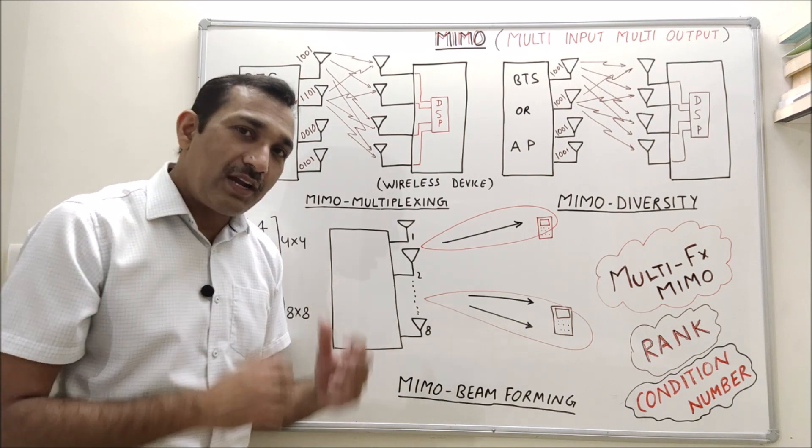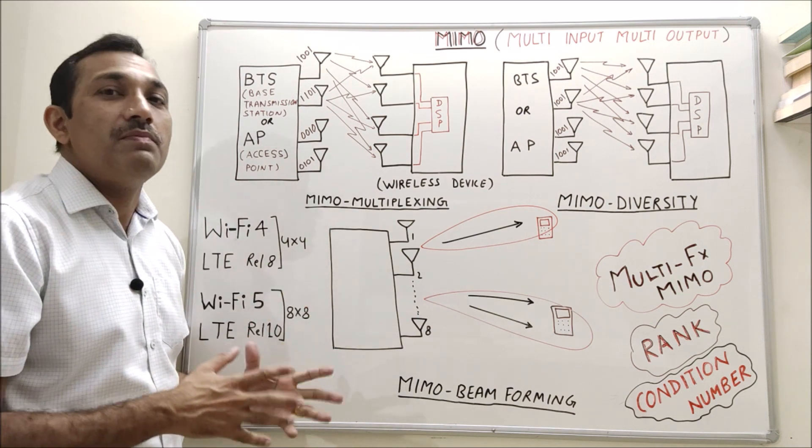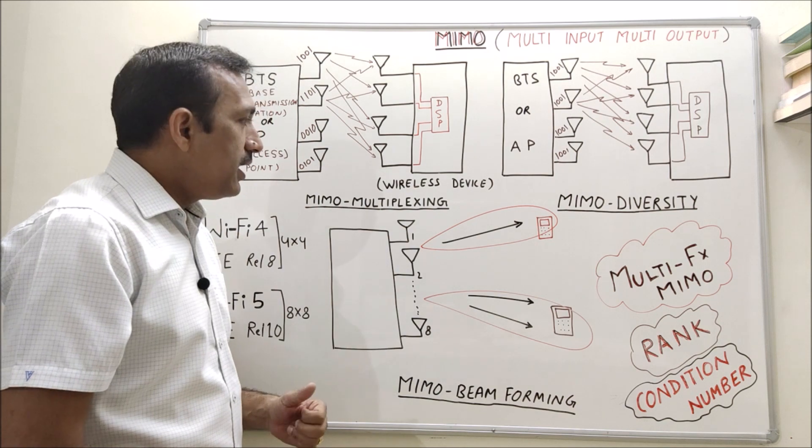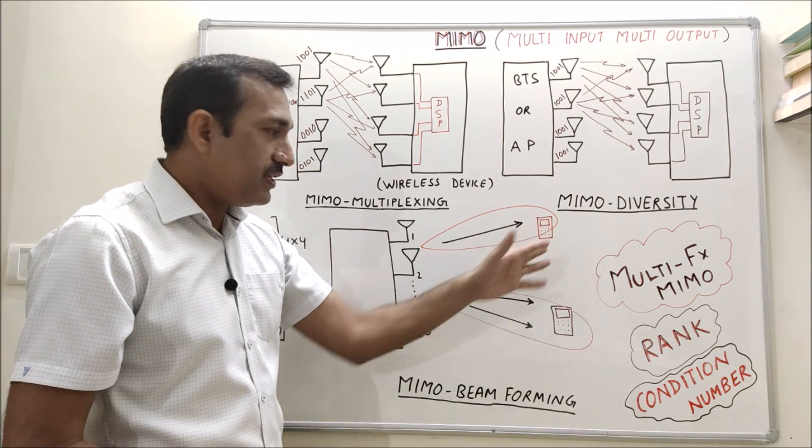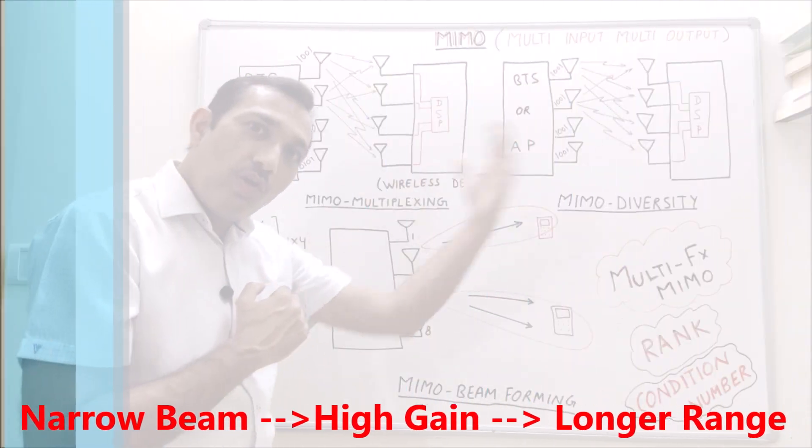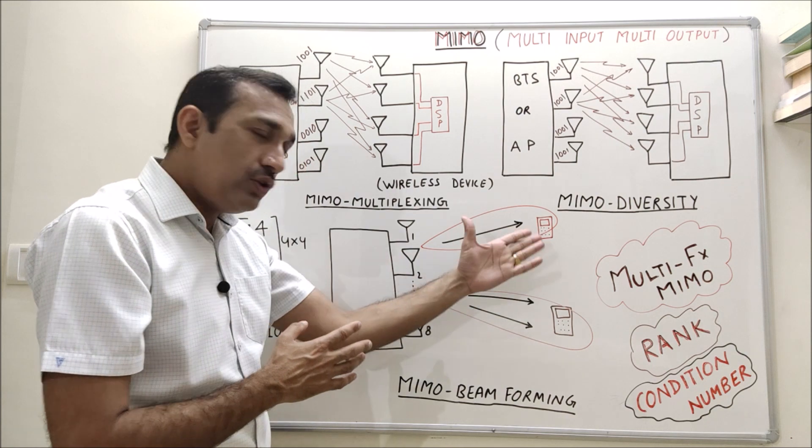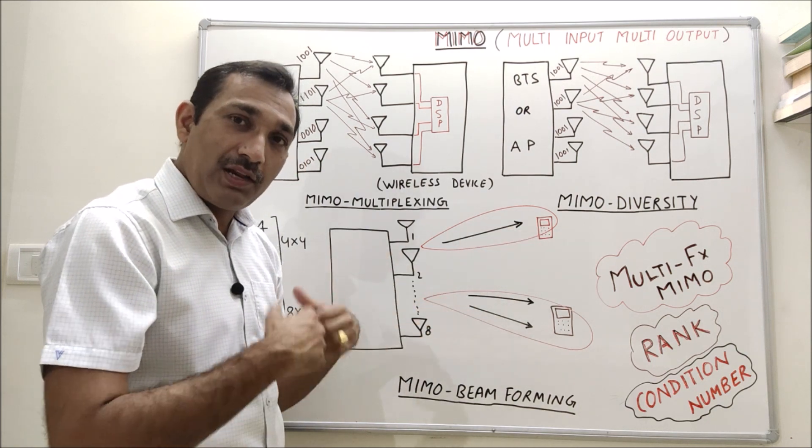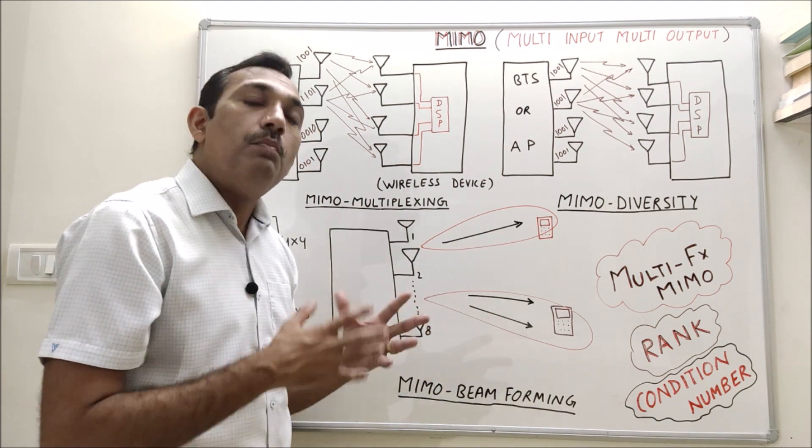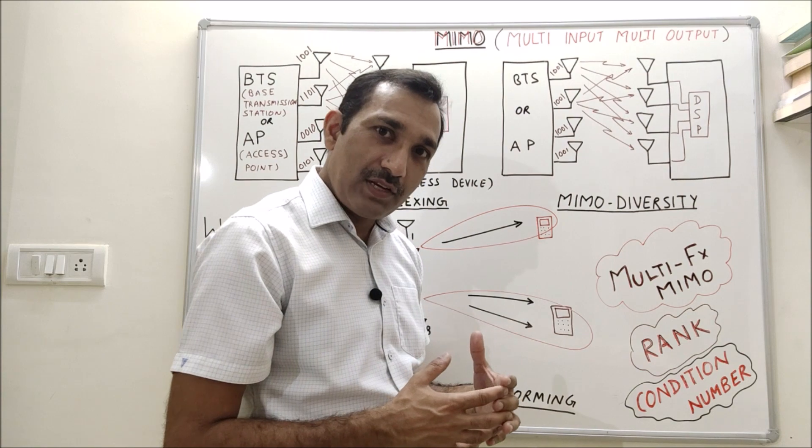Now let's talk about MIMO beam forming. Beam forming is efficient when number of antennas are more. So when we have 8 x 8 MIMO it is more efficient because beam can be formed efficiently. Suppose we have these 8 antennas and I have different devices, so I can form a beam with high gain which can go at longer distance.